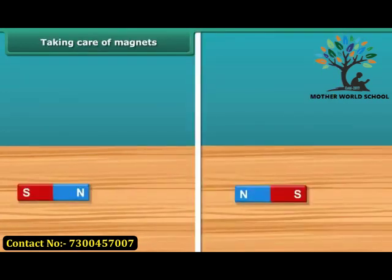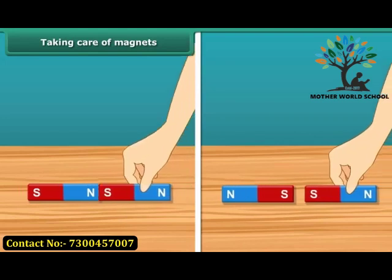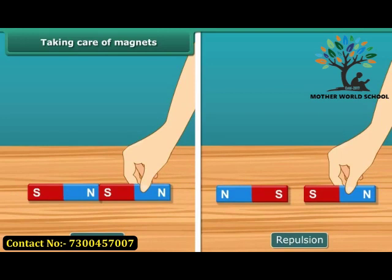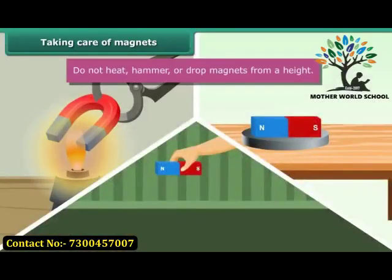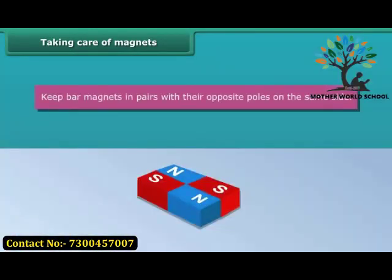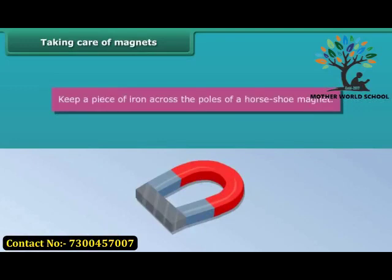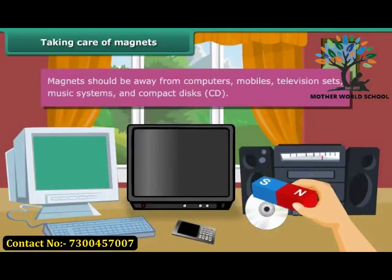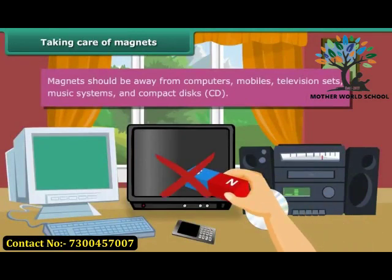To keep magnets safe and in working condition, follow these guidelines: do not heat, hammer, or drop magnets from a height, as they will lose their properties. Keep bar magnets in pairs with their opposite poles on the same side, using wood to separate them. Keep a piece of iron across the poles of a horseshoe magnet. Magnets should be kept away from computers, mobiles, televisions, music systems, and compact discs.